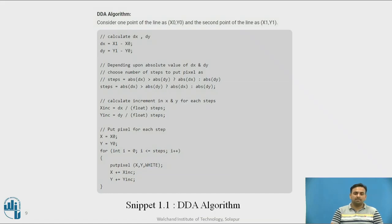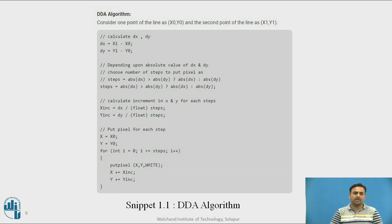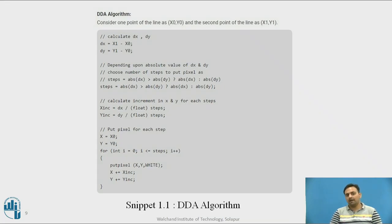You can see a code snippet for the DDA algorithm on the screen. In this function, first you can see the dx and dy values. dx is the difference between the x coordinates from start point to end point, and dy denotes the difference between the y coordinates of the starting and end point. After that you calculate the steps: whichever is the biggest difference — among dx and dy — is assigned as the length, and we traverse according to it.